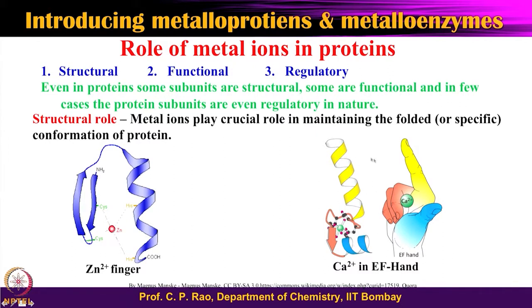Similarly, in another example, there is an alpha helical component shown in yellow, another in blue, an open region in cyan, and some beta sheet, with a zinc ion in this region. The zinc ion holds this region so that the two alpha helices are roughly perpendicular. The role here is purely structural — it holds this part of the protein with another part together with respect to the metal centre.